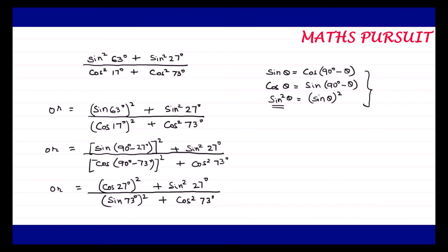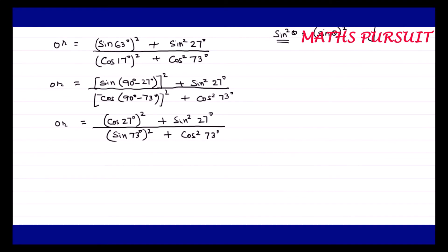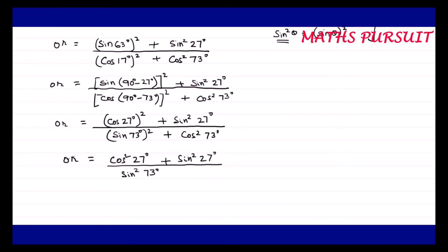Hope till here we are pretty clear. Keeping in mind that sin θ = cos(90° − θ), cos θ = sin(90° − θ), and sin²θ = (sin θ)², I can now rewrite this as cos²27° + sin²27° upon sin²73° + cos²73°.